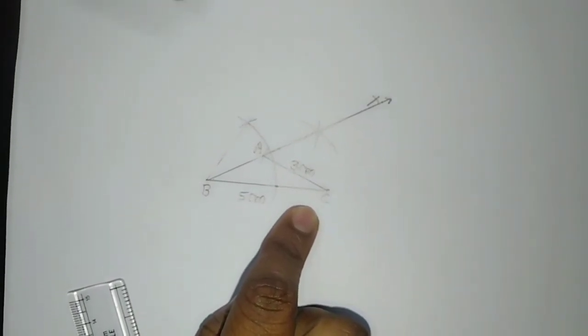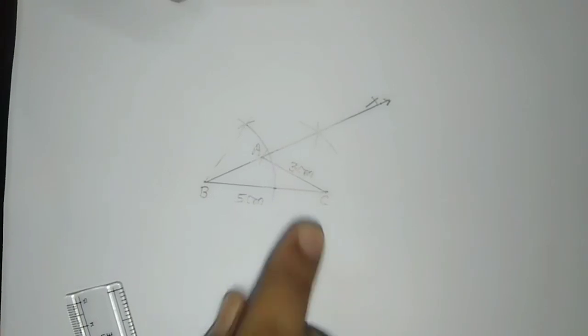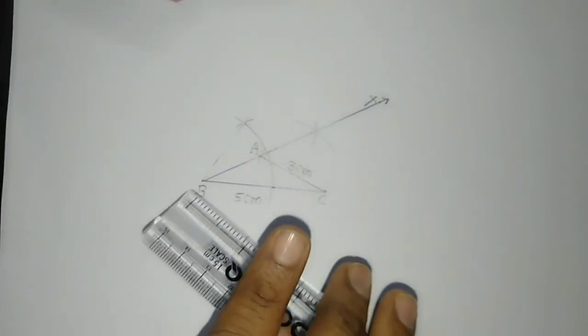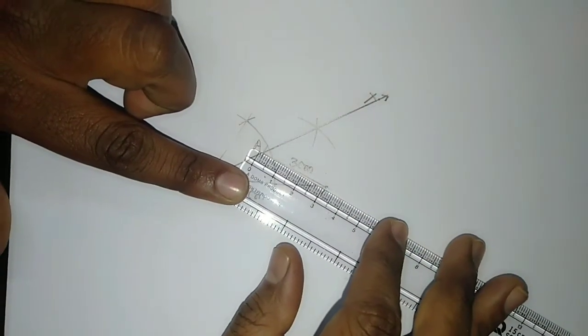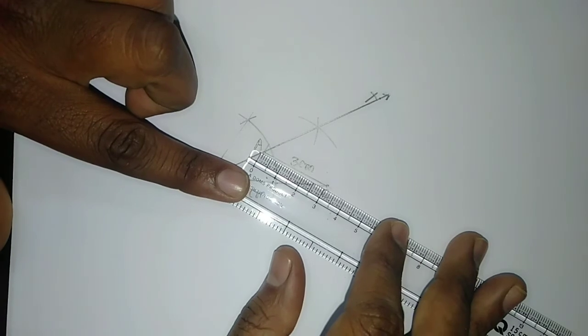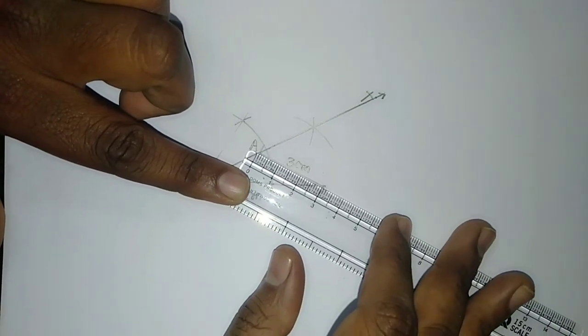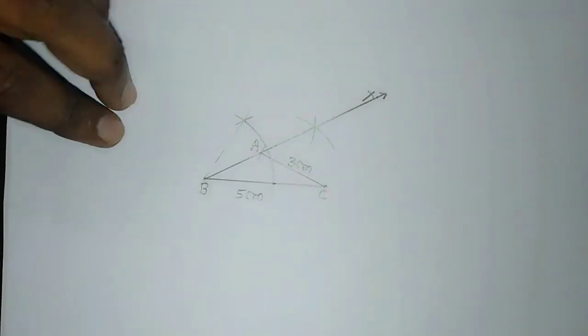You can measure it. After doing this it would be exactly of measure 30°. With the help of protractor you can measure. And this AC is of 3cm. You can see this is of 3cm measure.